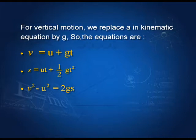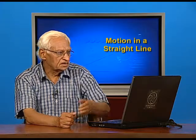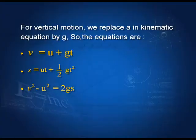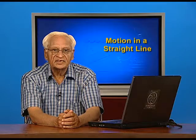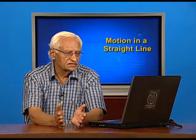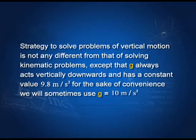For vertical motion, we take the same kinematic equations — all we do is replace A by g, the acceleration due to gravity. We get: v = u + gt, s = ut + ½gt², and v² − u² = 2gs. The strategy to solve these problems is the same as before. The value of g for most places on earth is 9.8 m/s², but to illustrate problems here, we take g equal to 10 m/s².